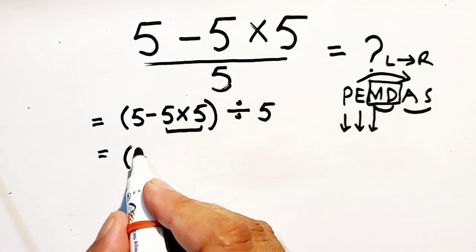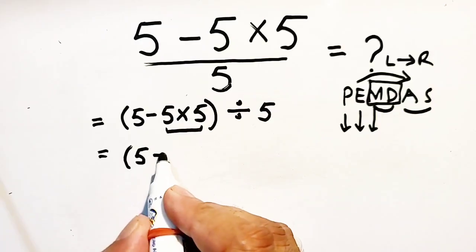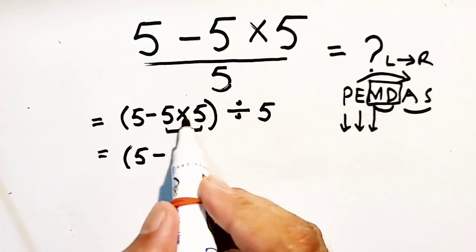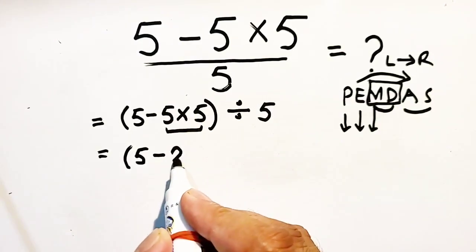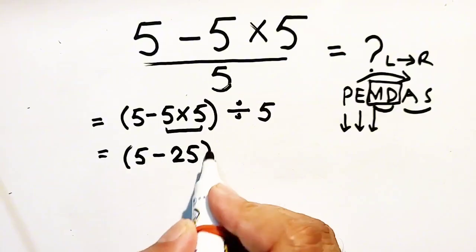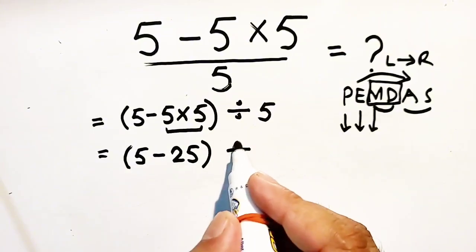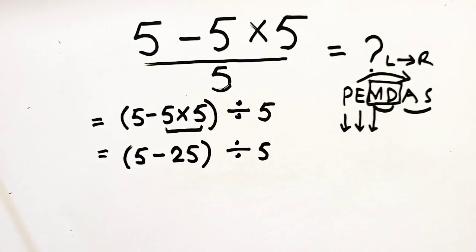So, it will be 5 minus 25 divided by 5. Now, 5 minus 25 will be equal to minus 20 divided by 5.